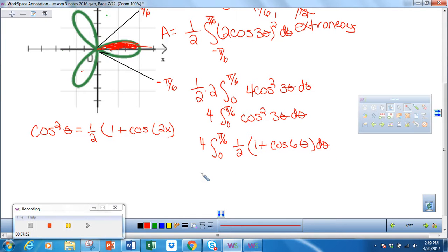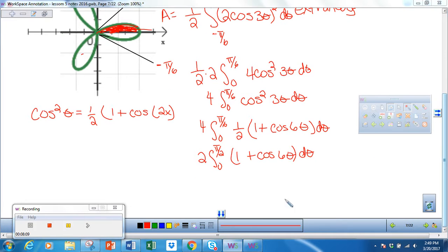Now I'm going to integrate that. I'm ready to integrate, finally. The two remains on the outside. The integral of one is θ plus, using chain rule, I get one sixth sine 6θ. I'm integrating this from π/6 to zero.